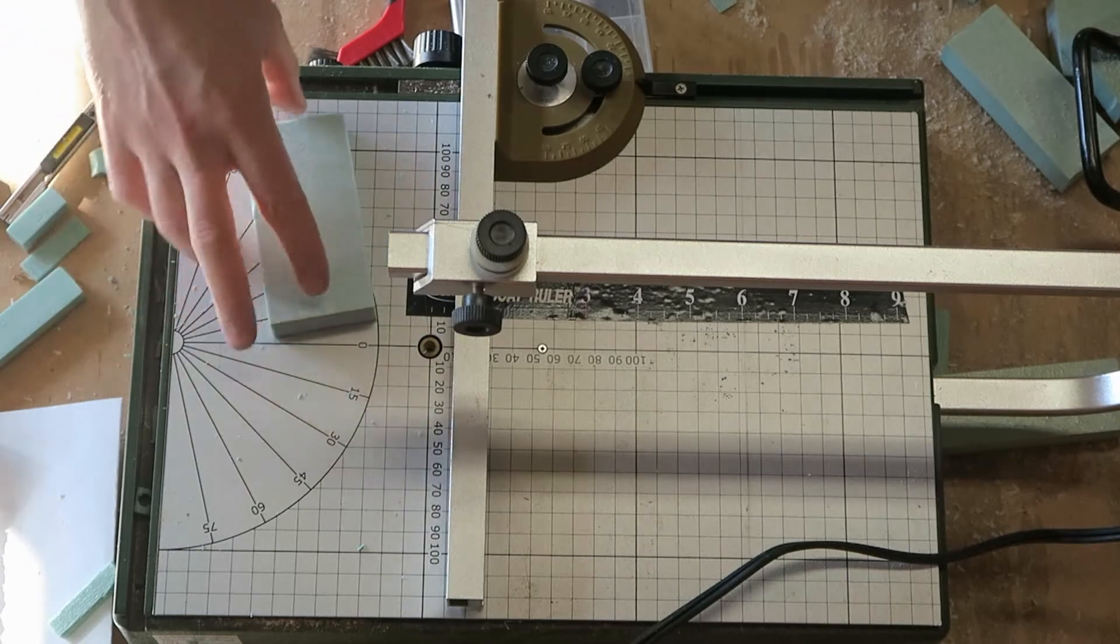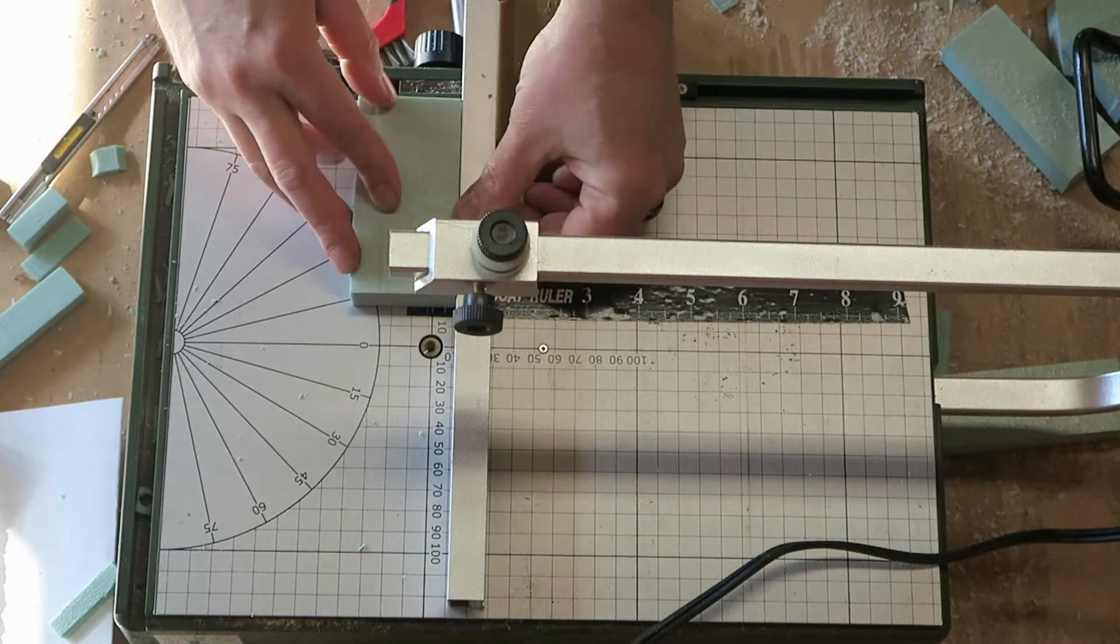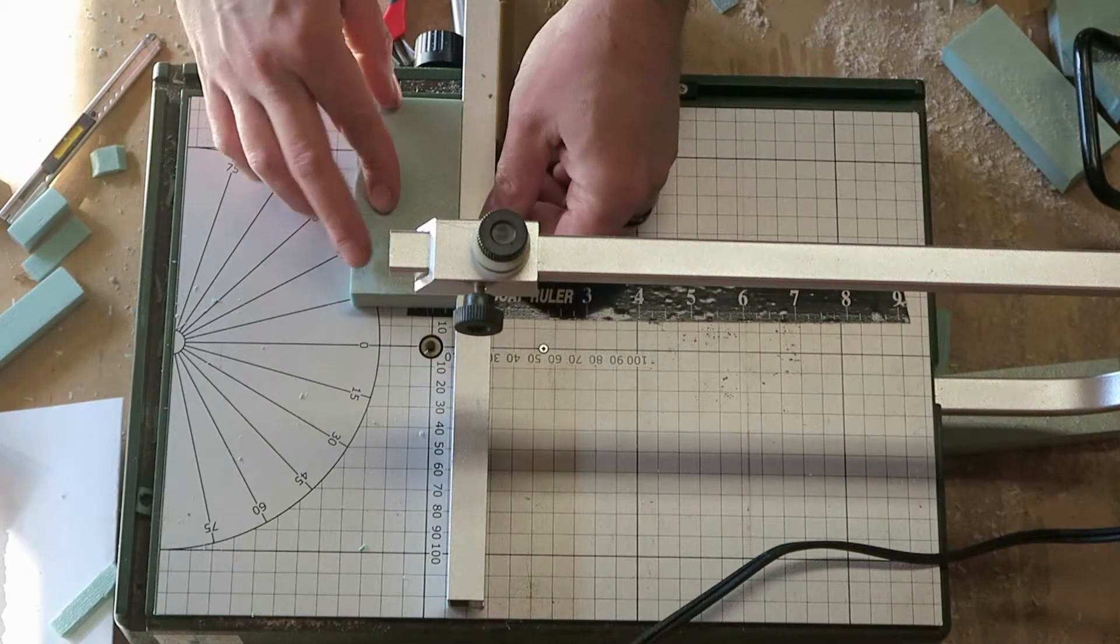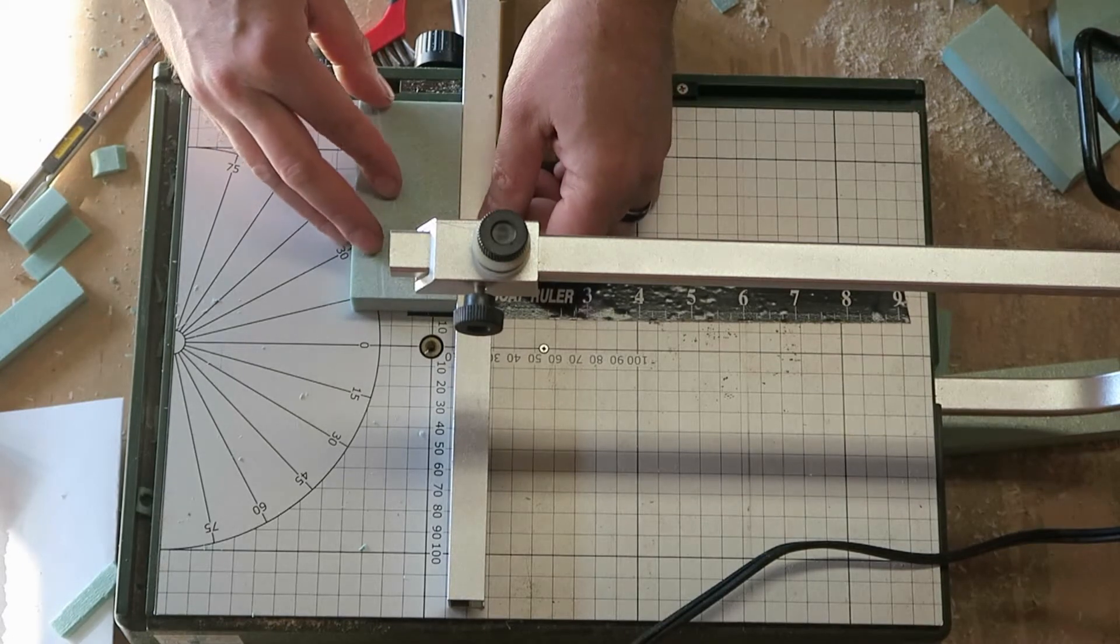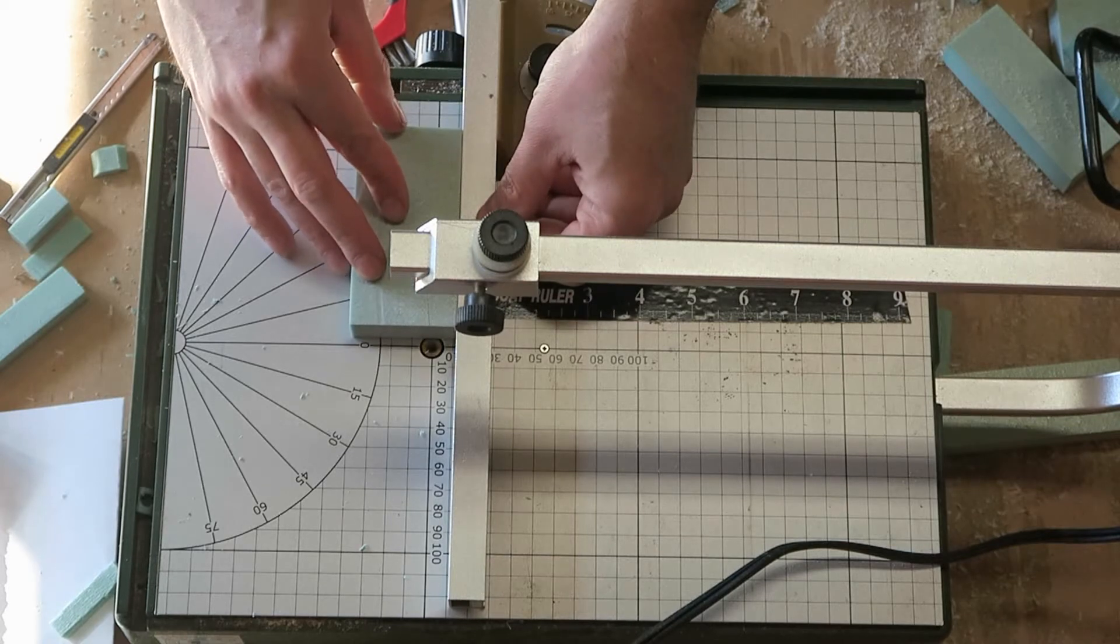I've got some foam insulation here. I've already marked this at a half inch. The posts are going to be a half inch because we need room to drill the hole through it and put the wire through. I'm going to run a couple of these through real quick.